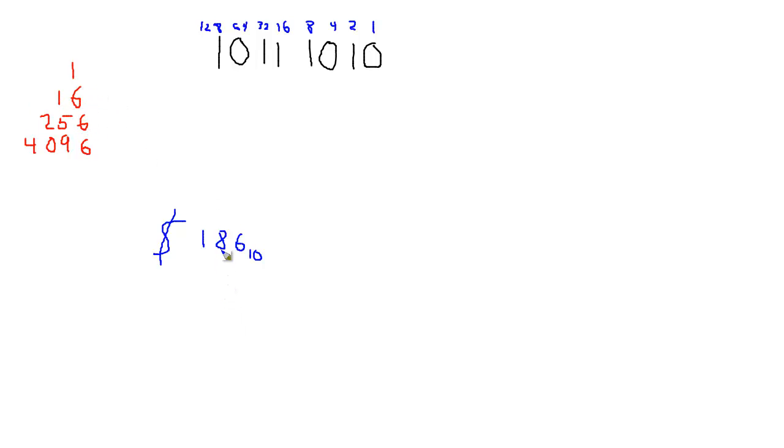So how many 16s go into 186? Well, we can do the longhand way. 16 into 186. 16 goes into 18 once, and then we got 26. And then 16 goes into 26 once, and then that leaves us with 10. So 11 remainder 10.